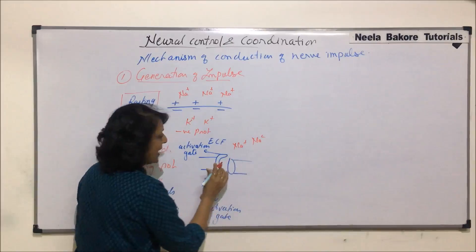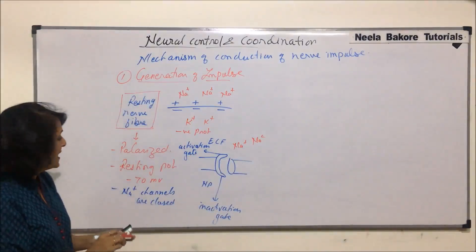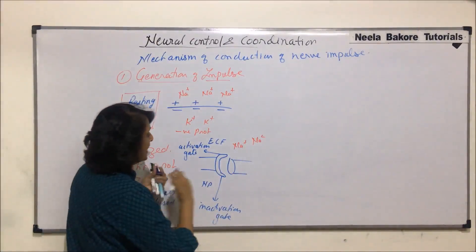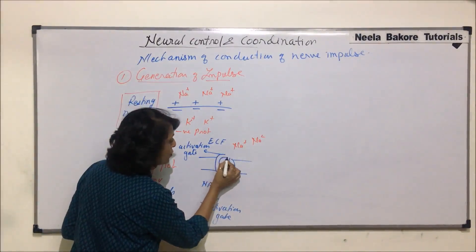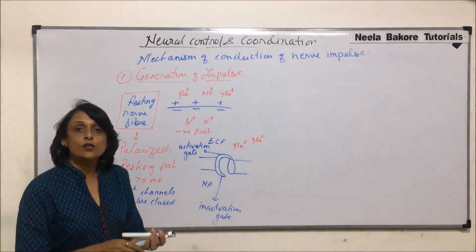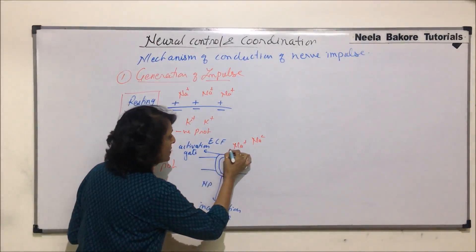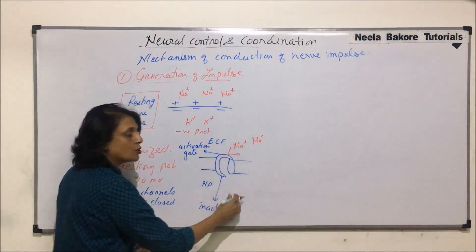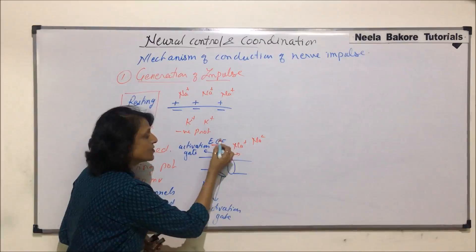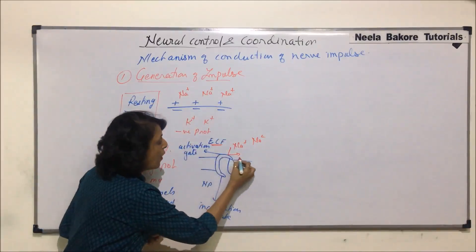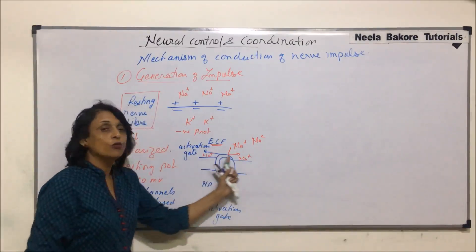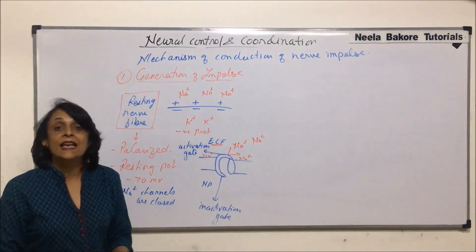At this resting potential of minus 70 millivolts, the activation gate of the sodium channel is closed. Because this gate is closed, sodium ions are not able to come in — they remain in the extracellular fluid. So all along, sodium ions remain on the outer side, which is why the outer side of the membrane is electropositive.